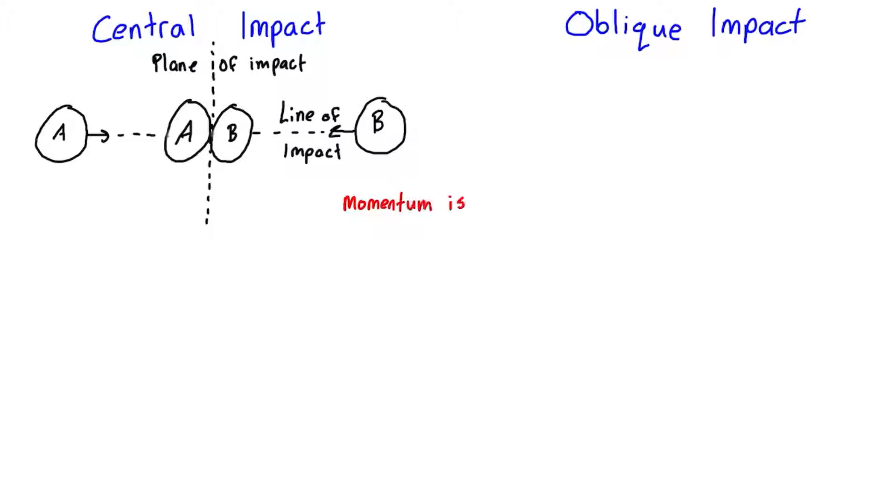Basically, the momentum is going to be conserved along the line of impact. So if a central impact has the motion of the objects totally perpendicular to the plane of impact, then an oblique impact has some component of the motion not perpendicular to it.